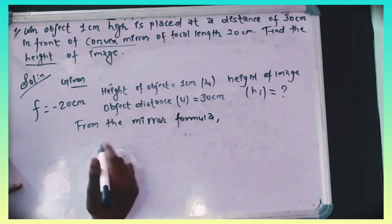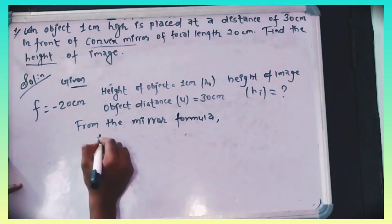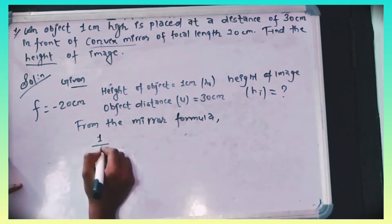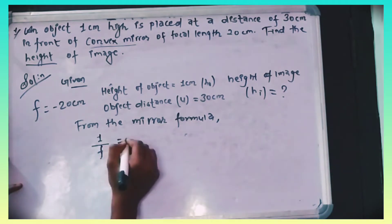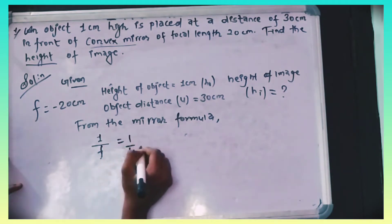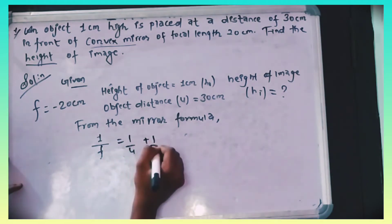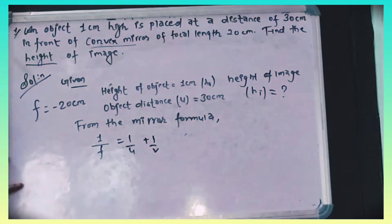Using the mirror formula. The mirror formula is: 1/f is equal to 1/v plus 1/u. Now we know about this mirror formula.